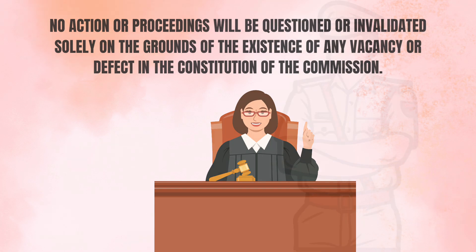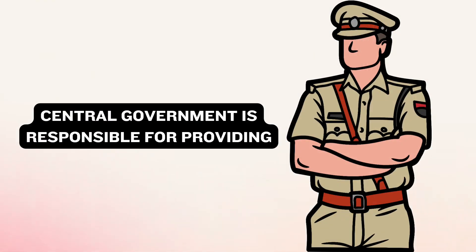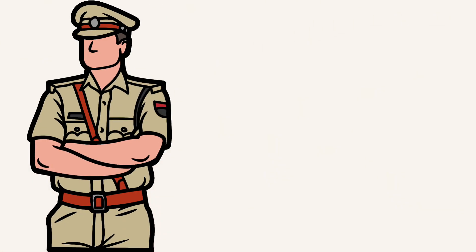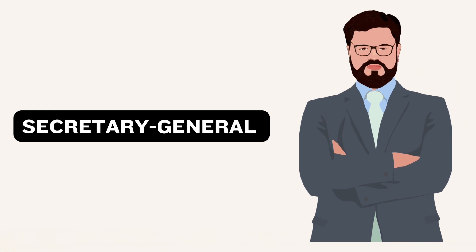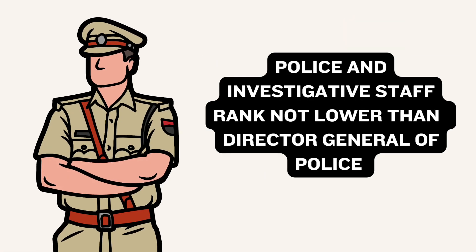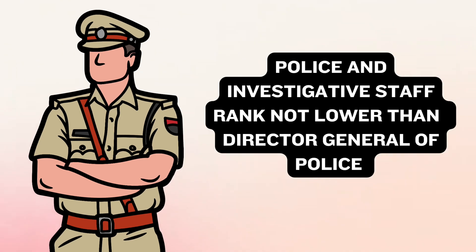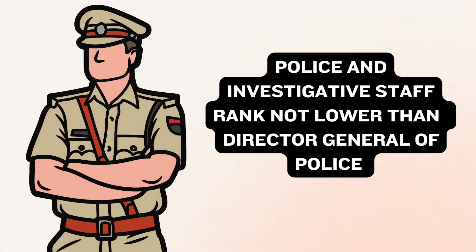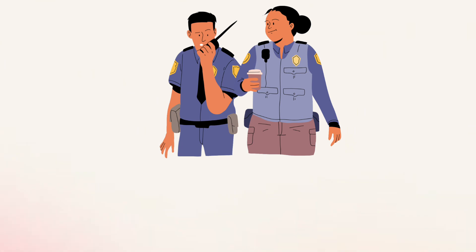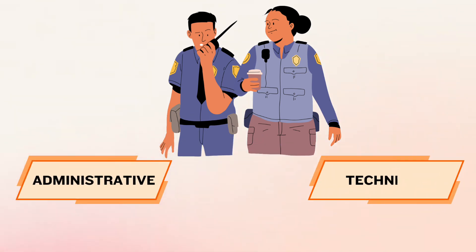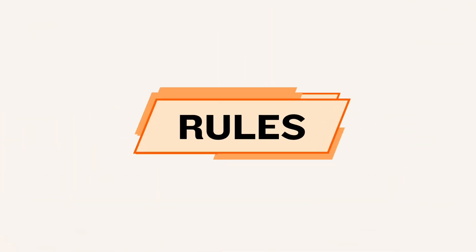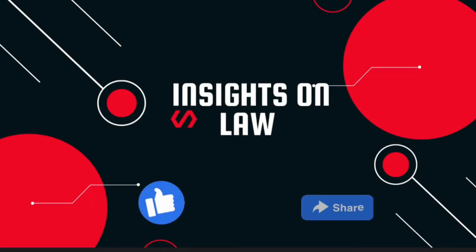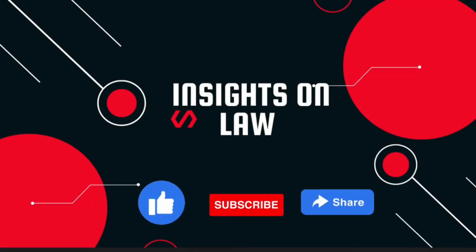The central government is responsible for providing the NHRC with necessary officers and staff, which includes the appointment of a Secretary General and appointing police and investigative staff with a rank not lower than Director General of Police. The NHRC has the authority to appoint additional administrative, technical and scientific staff as it deems necessary, in compliance with rules established by the central government.